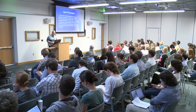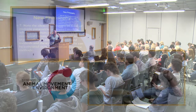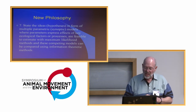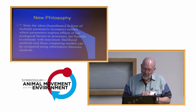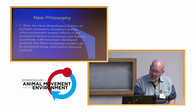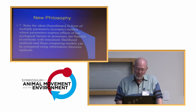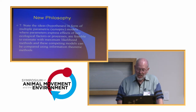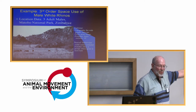The seventh part is to state the ideas and hypotheses in the form of multiple parametric synoptic models where the parameters express the effects of key ecological factors or processes. They are feasible to estimate with maximum likelihood methods, and these competing models can be compared using information-theoretic methods.